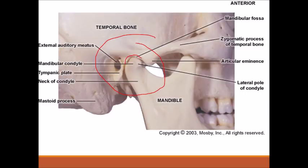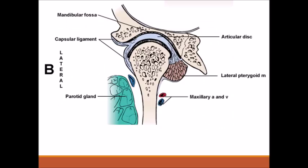Here you can see the glenoid fossa and the articular eminence. This is the head of the mandible. This is a lateral view of the temporomandibular joint. Here is the head of the mandible, here is the glenoid fossa, here is the articular eminence, and this is the articular disc, which is avascular with no innervation.